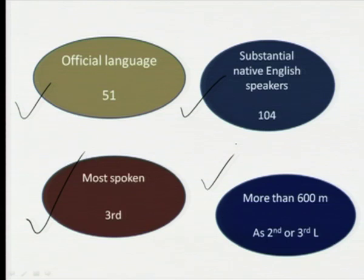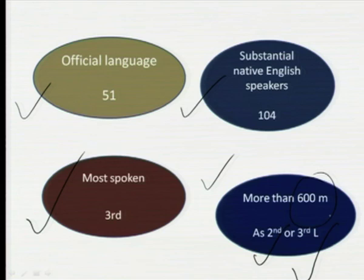More than 600 million people use the English language as a second or third language. So, for instance, if your native language is not English — my mother tongue is Assamese — you nevertheless use English. Even as a second or even third language, the number of people who use English is more than 600 million in the world.